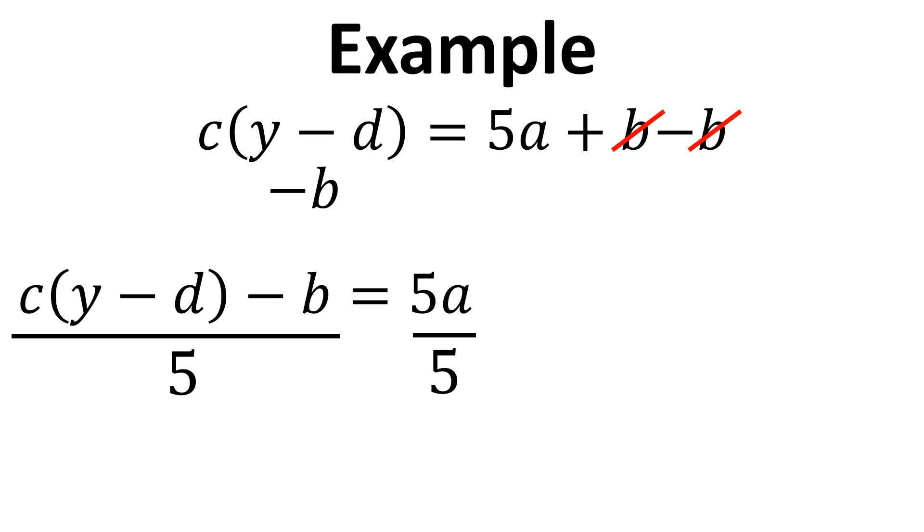So what we're left with now is the 5 next to the A, so we divide both sides by 5. The 5s cancel on the right hand side, and so we have A equals C multiplied by Y minus D in brackets, subtract B, and then divide by 5.